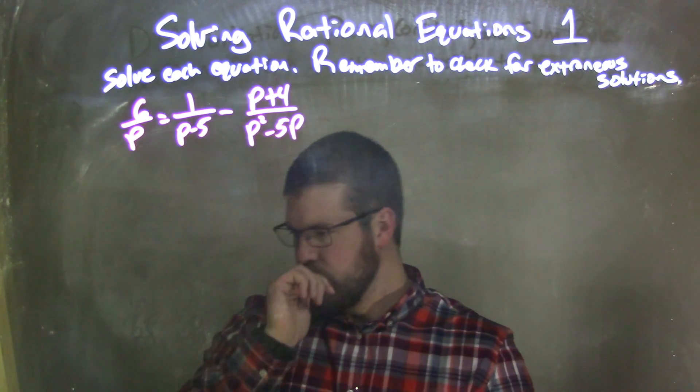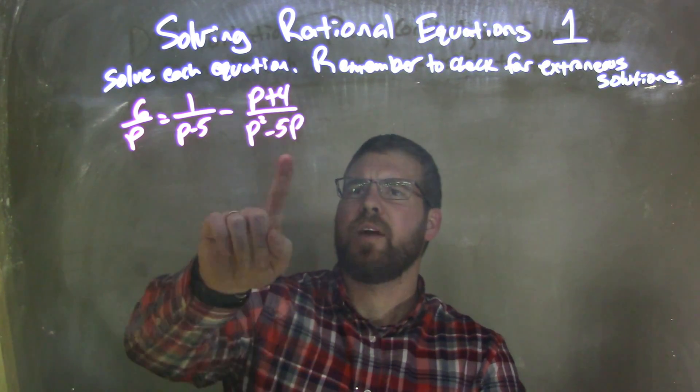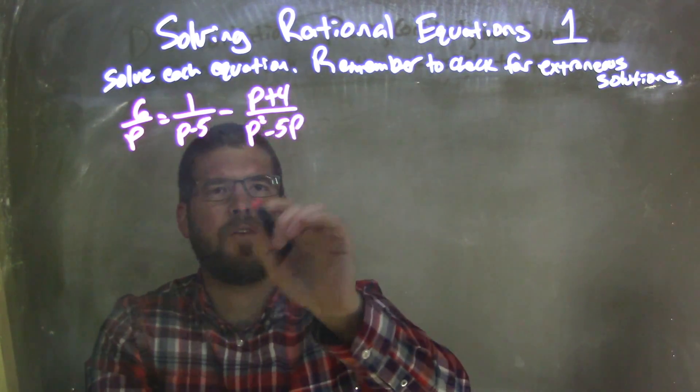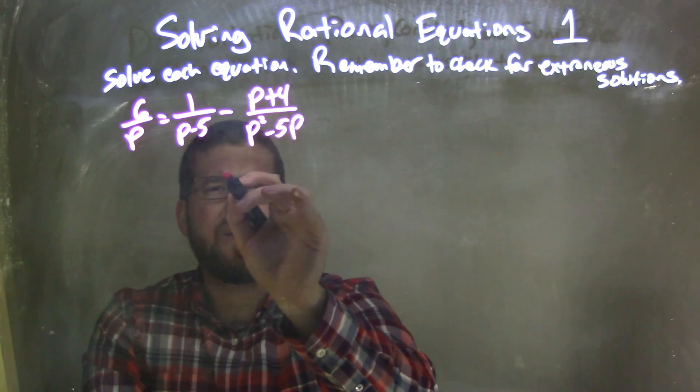Well, what I'm going to do here is I need to see how can I combine these two. And I see that p squared minus 5p, I think I could factor that out.